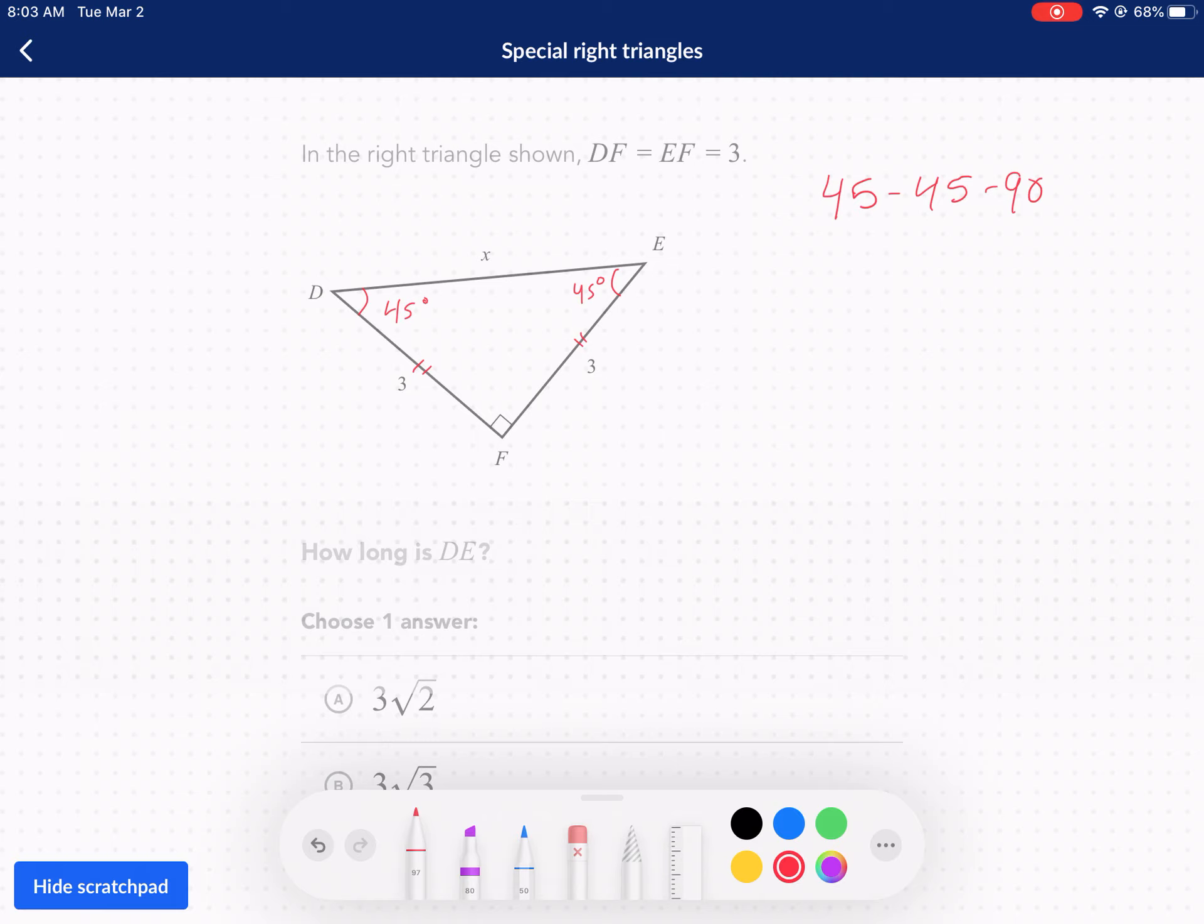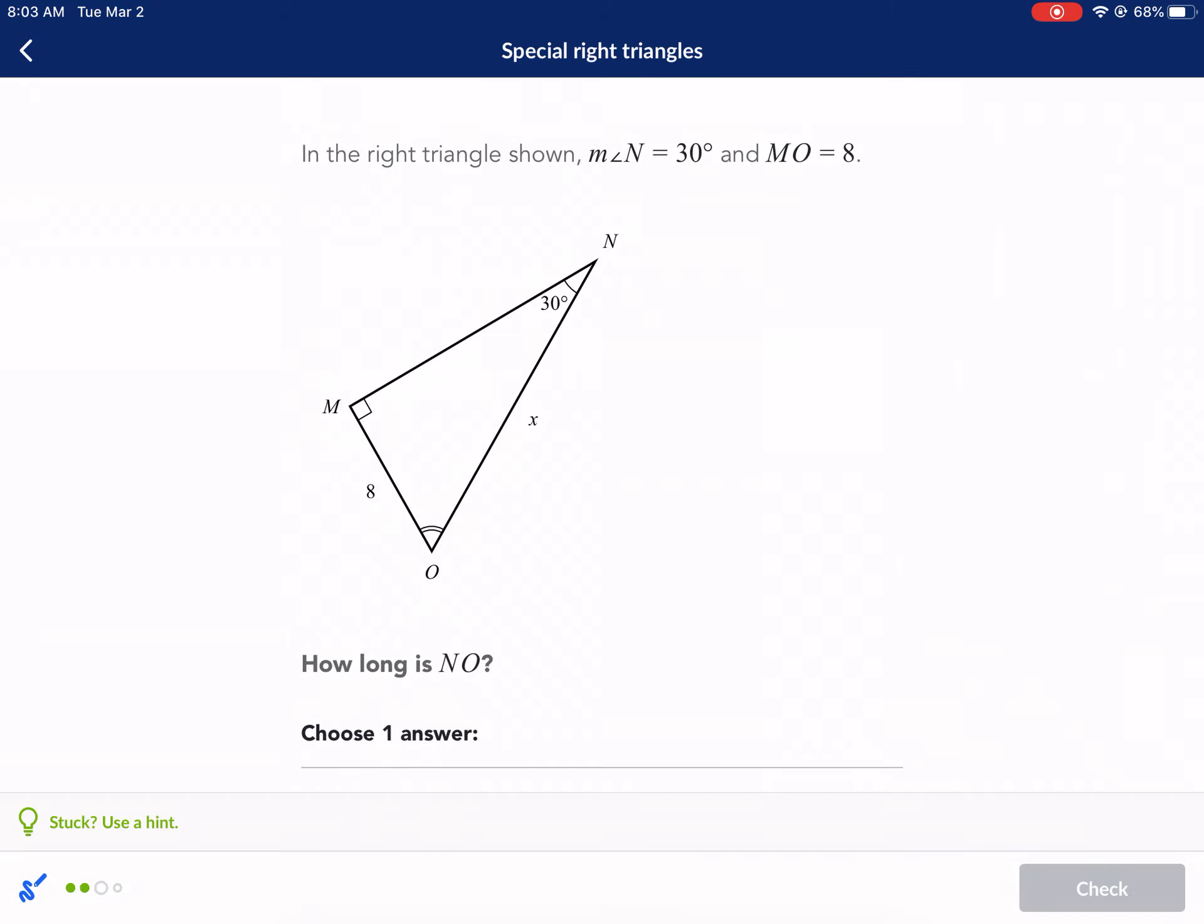Now the special property about 45, 45, 90 is that you can take the short side, we'll call this one the short side. And then we'll call this one the long side, or hypotenuse. So the hypotenuse is equal to the short side times radical two. Okay, so if we take the short side, we know that's three, and we multiply by radical two, we have the hypotenuse. Oh, it's not radical three. Sorry, erase that. Ignore what I said. It's radical two. Very important distinction. 30-60-90 incorporates radical three, 45, 45, 90 incorporates radical two. So hypotenuse is three radical two.